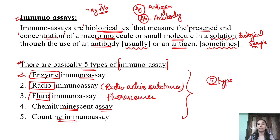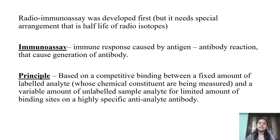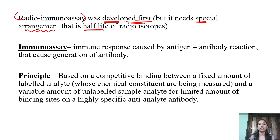These 5 types of immunoassays use different antigen-antibody interactions to check the presence or absence of a particular antigen and macromolecules, and the concentration or amount of that particular antigen and macromolecules. Radio Immunoassay was the first developed immunoassay. It has a special arrangement because it works on half-life — half-life radioisotopes are used in this.